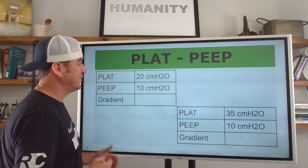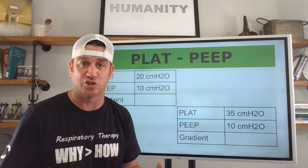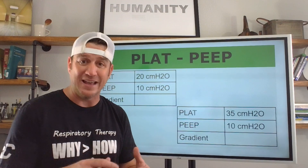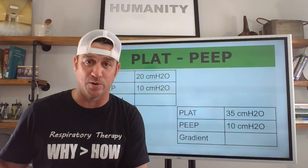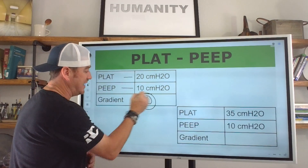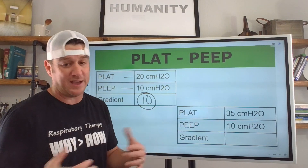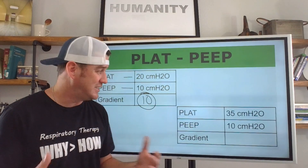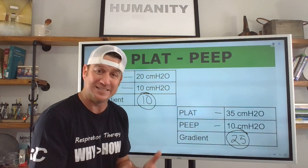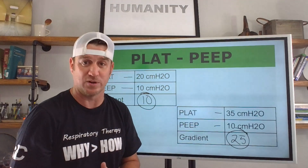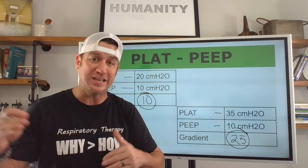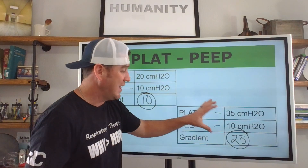Let's look at driving pressure: plateau minus PEEP. Driving pressure less than 15 is good; greater than 15 means higher risk for mortality in our ARDS population. With a plateau of 20 and PEEP of 10, the gradient is 10 — acceptable. But when plateau is 35 and PEEP is 10, the gradient becomes 25 — now we're in higher-risk territory for mortality. Anytime the gradient between two values increases, it's telling us something and we need to know how to treat it.